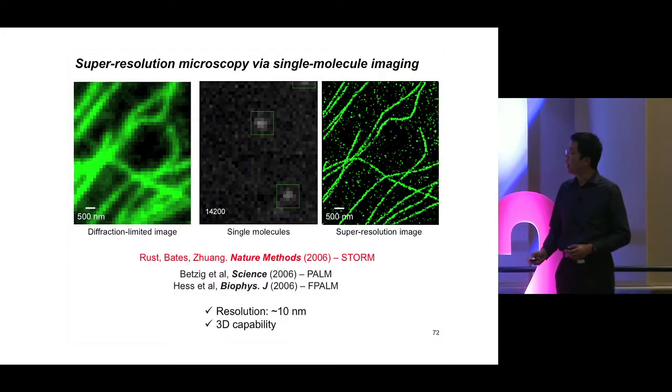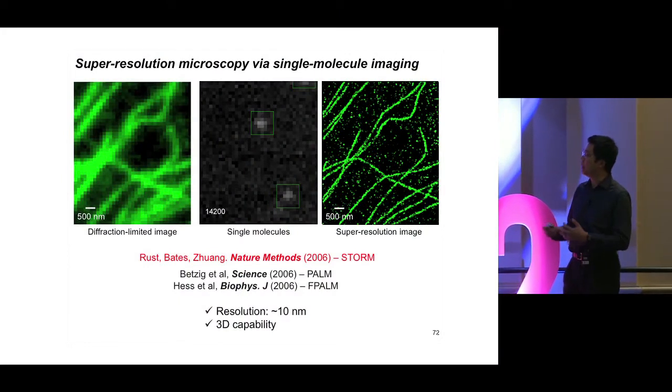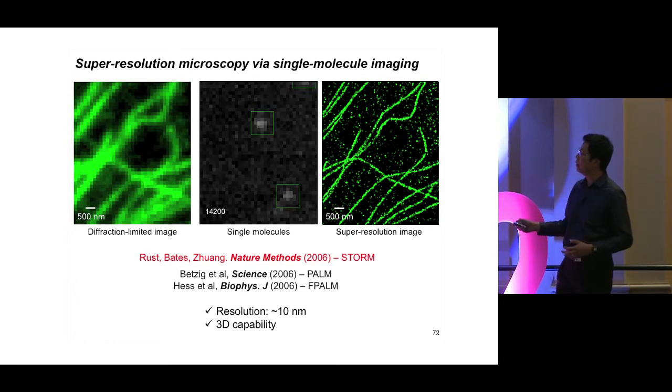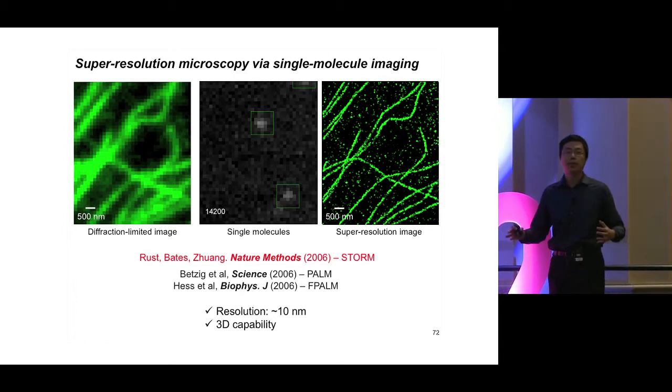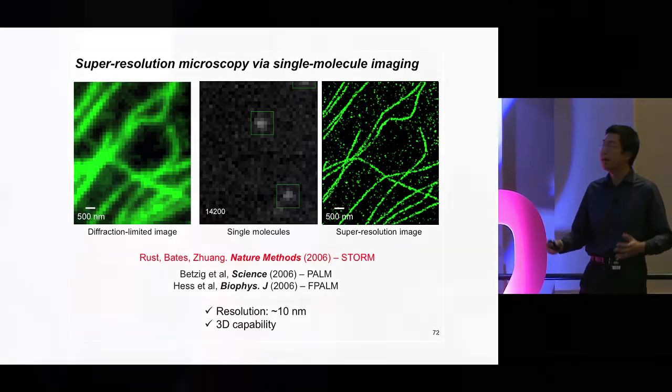The way we do it is based on the imaging of single molecules. We make the molecules blink on and off, so by blinking them we collect only a few molecules in each frame. Those molecules are far enough apart that we can localize the position of each molecule accurately, and by doing so over thousands of frames we gradually accumulate all the molecule positions to generate an image of much higher resolution.